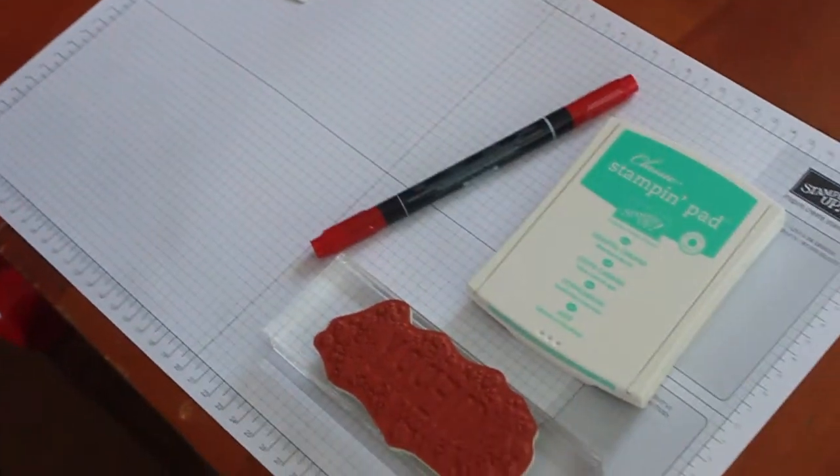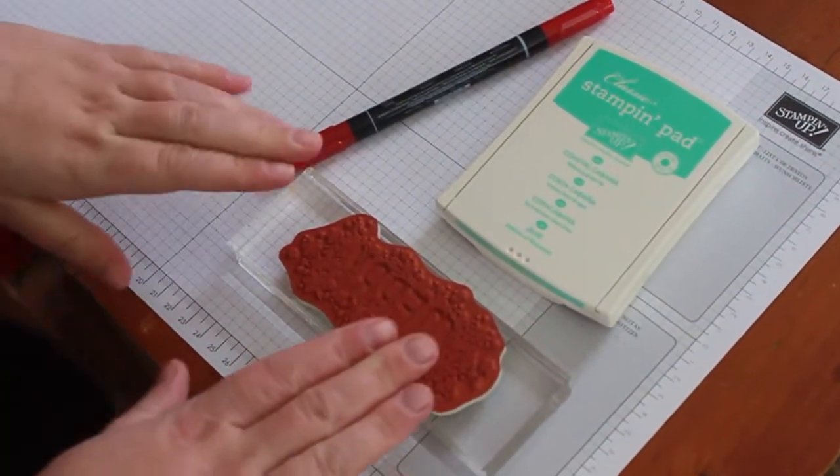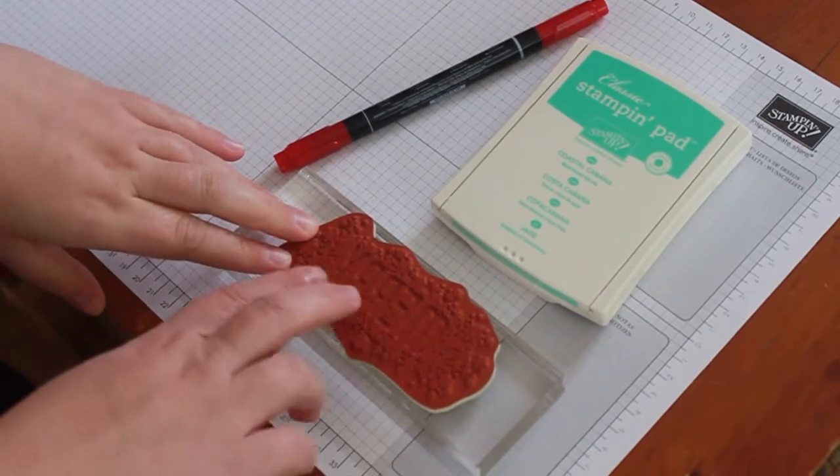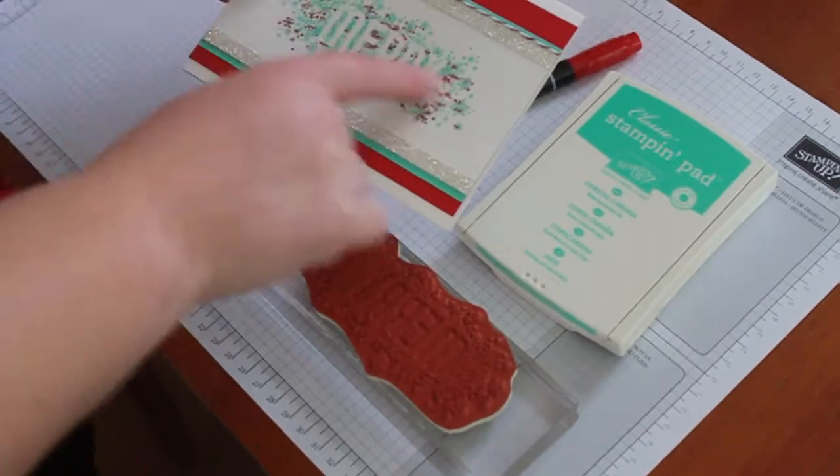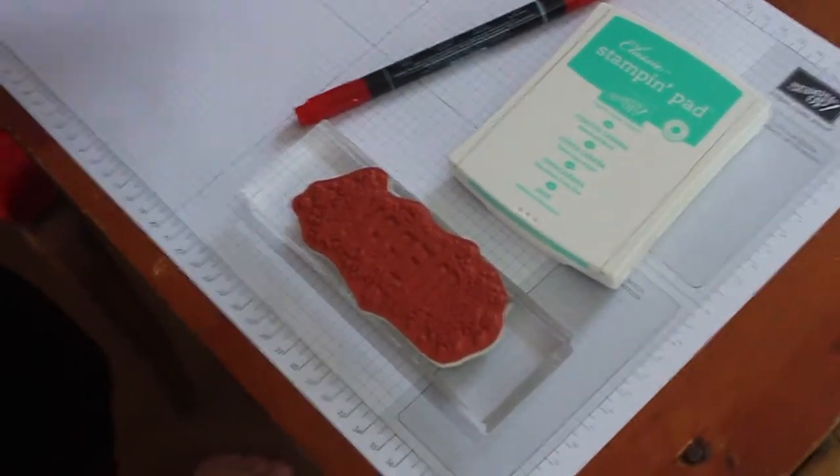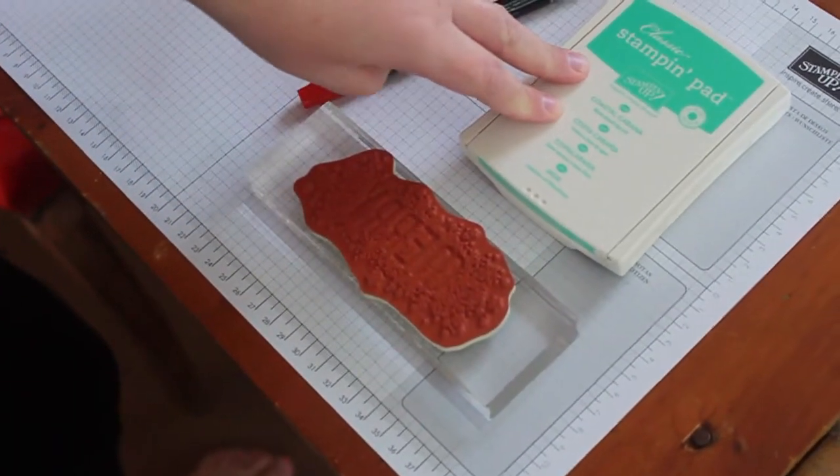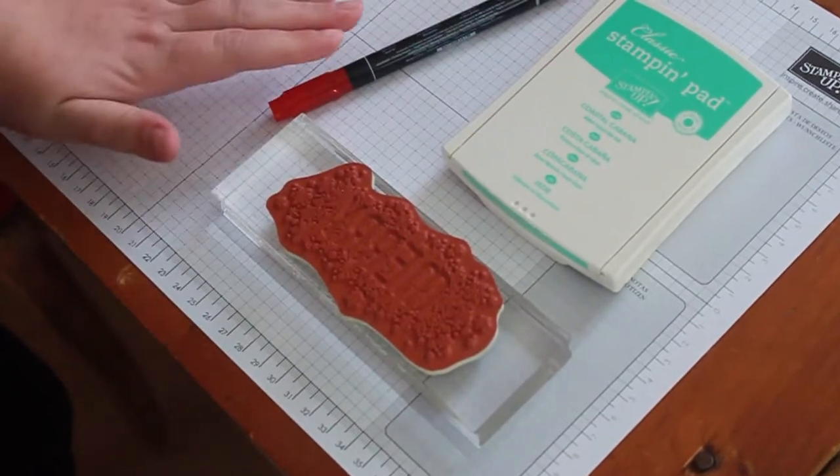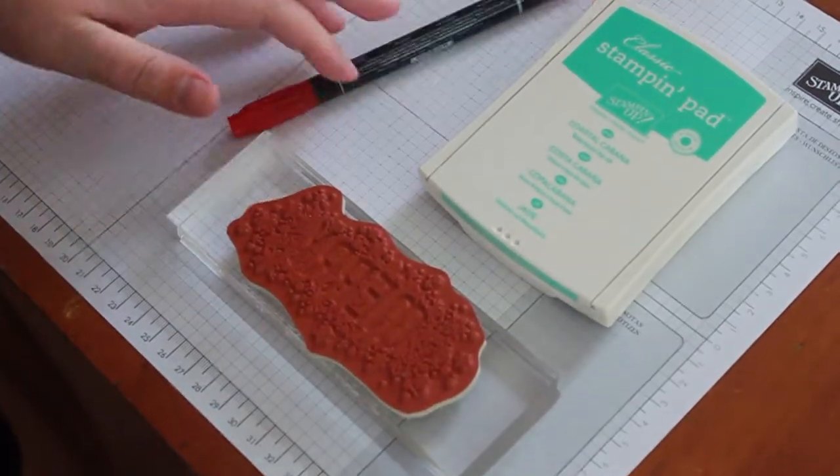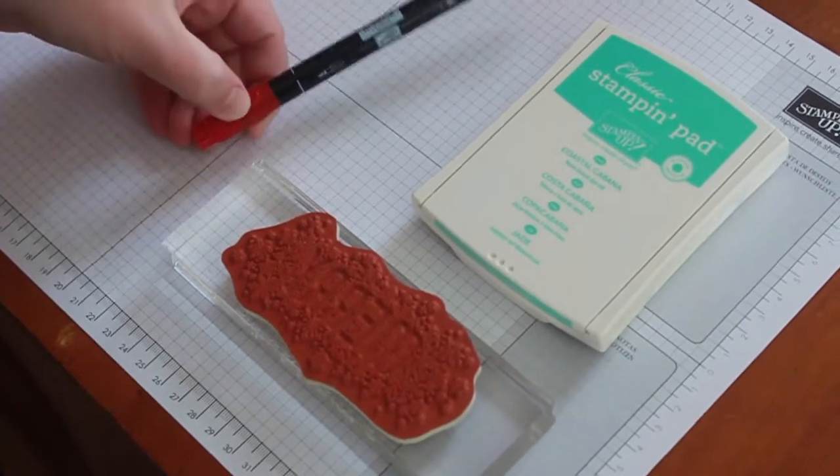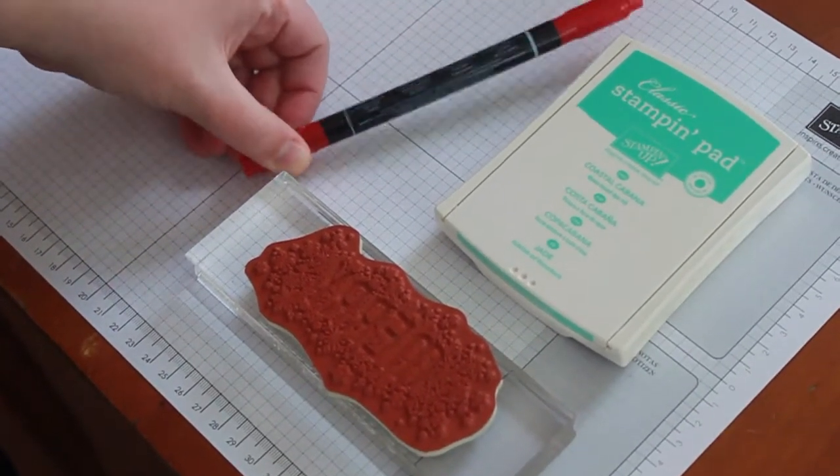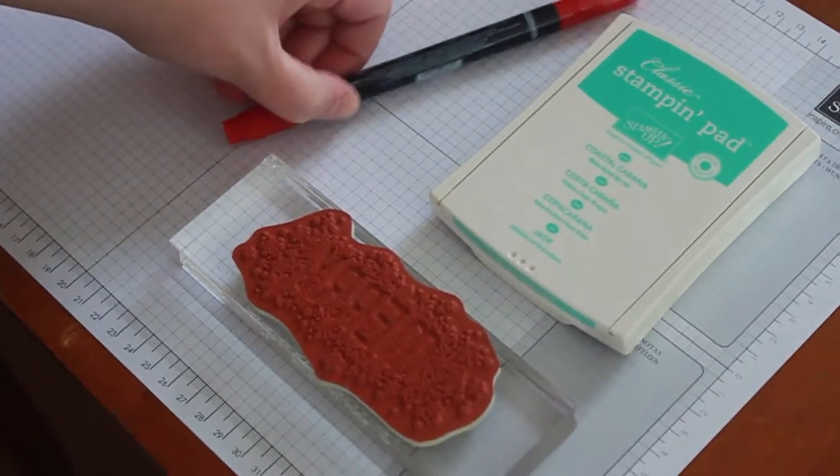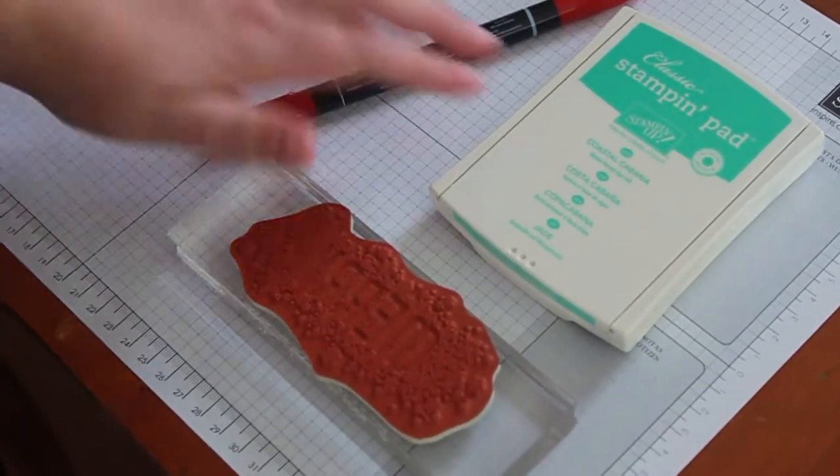These are the things you need for the thumping technique. You need a stamp with a lot of solid image to it. You can see there's a lot of solid area here on the snowflakes, a light colored ink to be your base color, and then one or more of the Stampin' Write markers. This technique will not work with the new Blendabilities. One or more markers that are a darker color than your base ink.